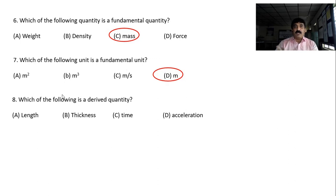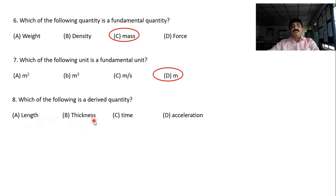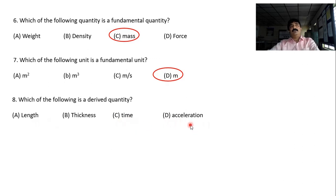The fundamental quantities are mass, length, time, and current. Length is not derived. Thickness is not derived. Acceleration is nothing but rate of change of velocity — so acceleration is a derived quantity. Therefore, D is the answer.